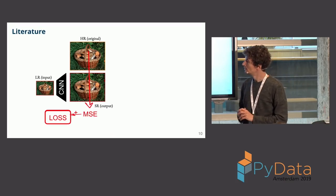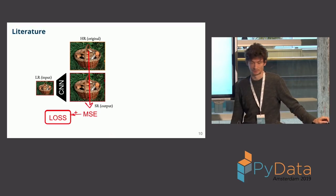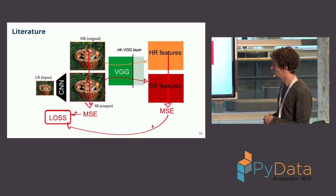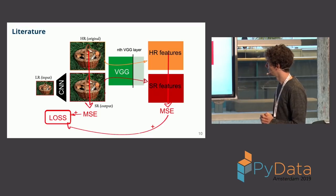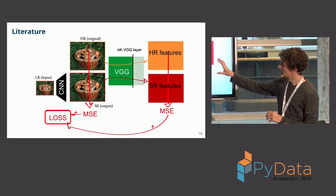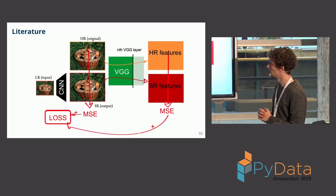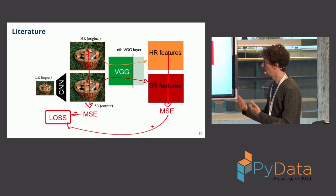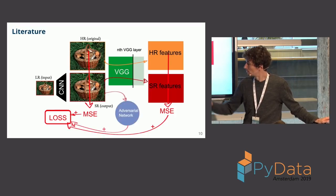For the very basic part, you compare the output with the original using mean squared error, though mean absolute error actually converges better. But there are more things you can do to have a better loss. For example, you could add a feature extractor to your loss — such as the VGG classification network — feed both images through it, compare the intermediate feature maps, and add that to your loss. You could also add an adversarial network.